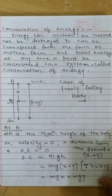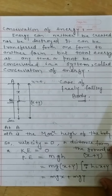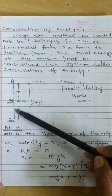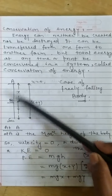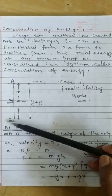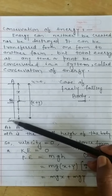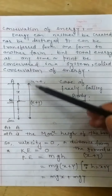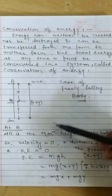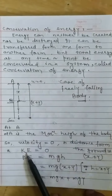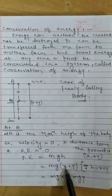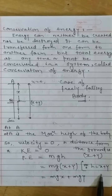Verification of conservation of energy in case of a freely falling body: Consider a body falling from A to B to C. A is the maximum height, B is an intermediate point between maximum height and the ground, and C is the ground surface. At point A, the maximum height from the ground is (X + Y) and velocity is 0.